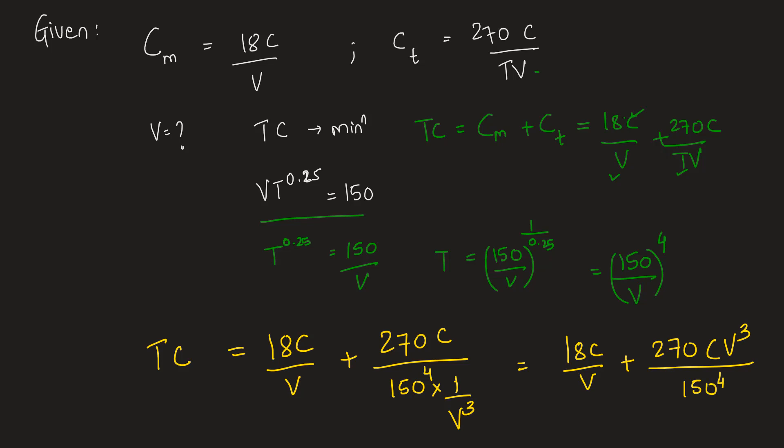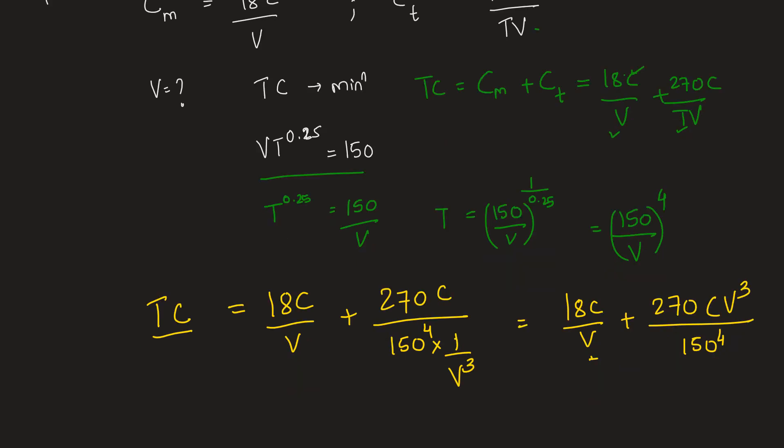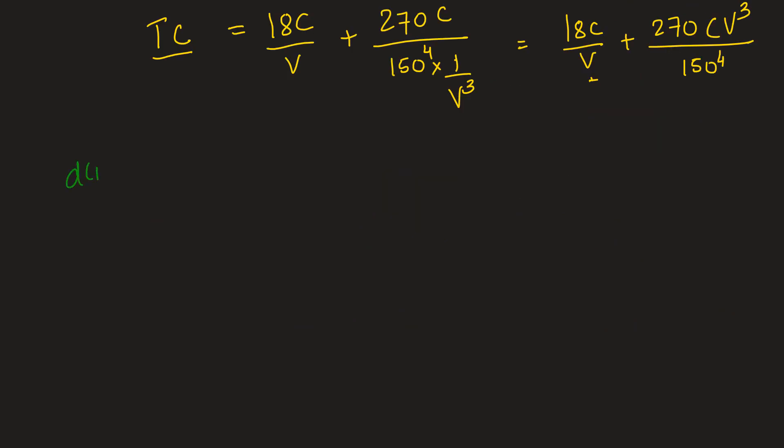Let's keep 150^4 as it is, and we'll calculate it when everything is completed. We have to calculate cutting speed for the minimum cost. To minimize this cost, we will have to differentiate total cost with respect to V because the only variable involved here is cutting speed V. Let's do it.